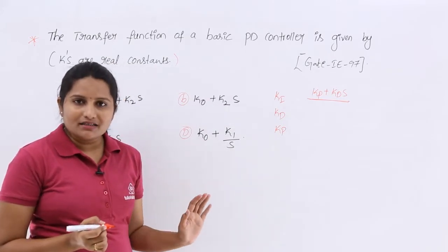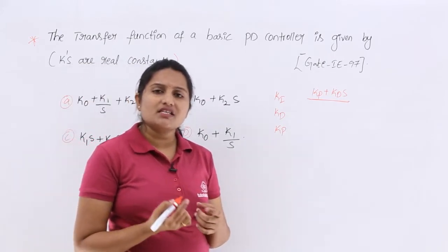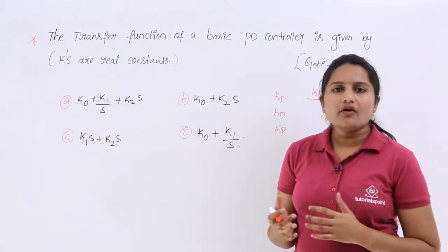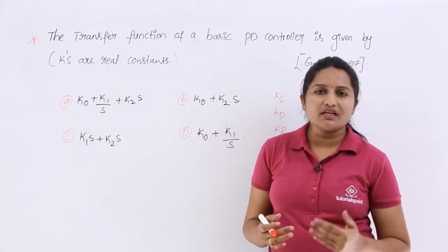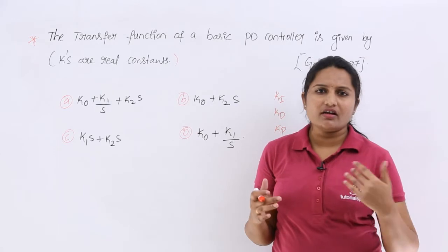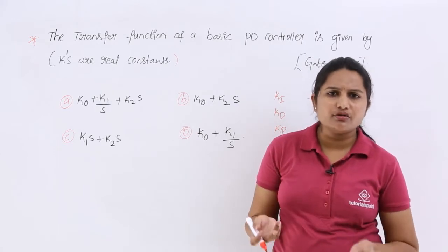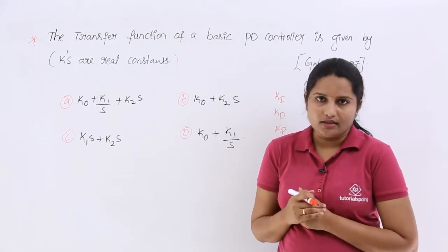But here, they are given in terms of K0, K1, K2 like that. How we can find out which one? K0 is Ki or K1 is Ki or K2 is Ki. How we can find out which one?